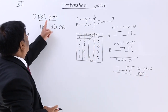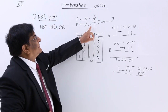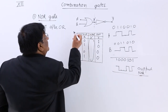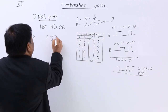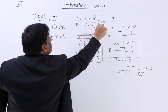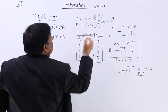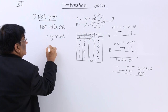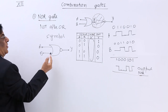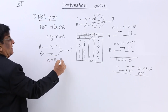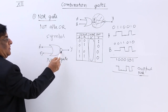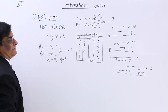So now we have the name of the gate — NOR gate. This is the combination of the gate, and with this combination we have made a symbol of the gate. We don't write the whole thing; we make a shortcut. This is the symbol of the NOR gate — please remember. This part is the OR gate, this small circle is for NOT, and together this is the NOR gate.